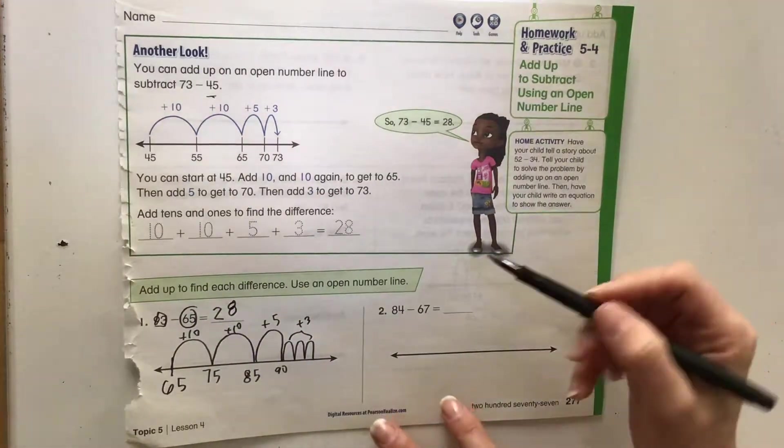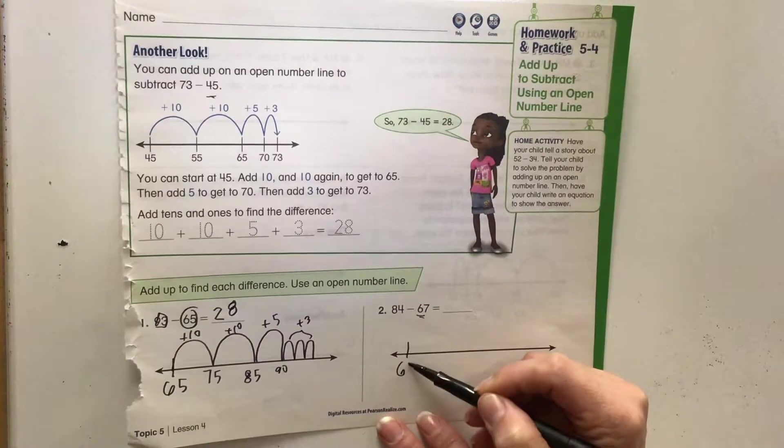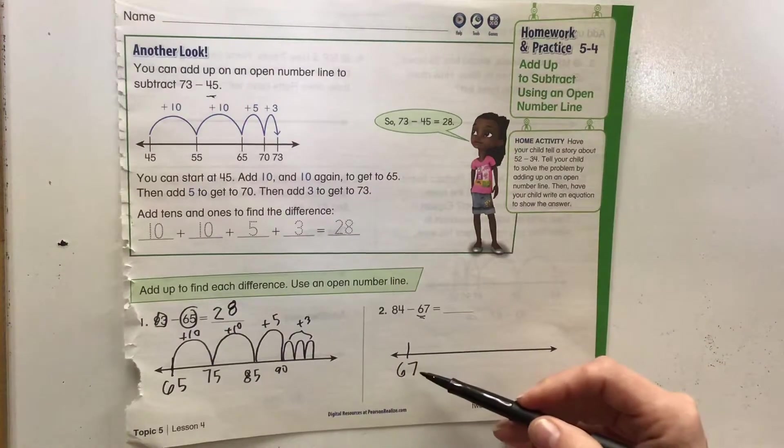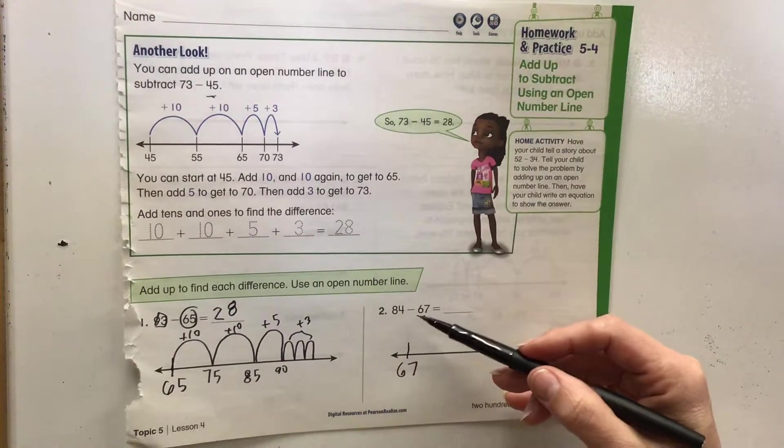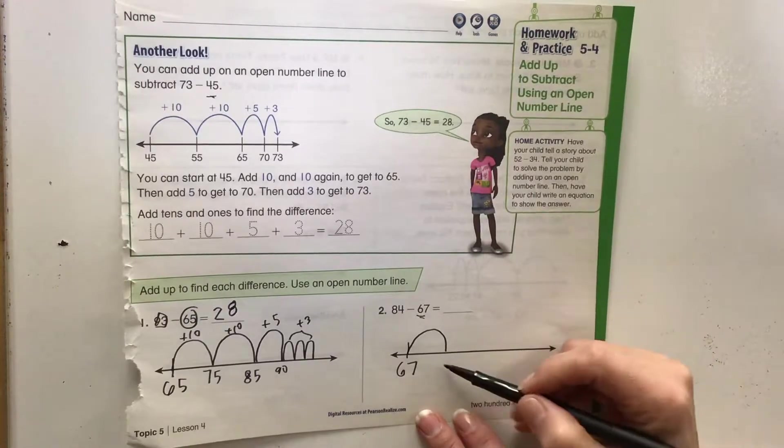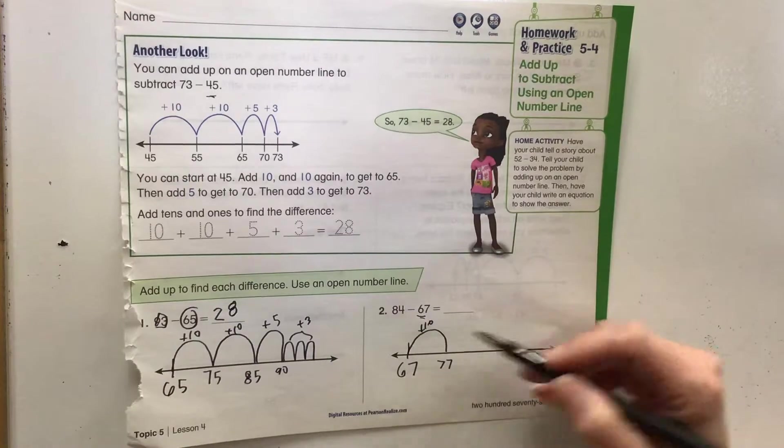Let's take a look at the next one here. We're going to start with the smaller number and add up, 67. We want to get to 84. So we know if we count by 10s, if we get to 87, that's too high. So 67, 77 is plus 10. If we do another group of 10, that's 87, that's going to be too high.